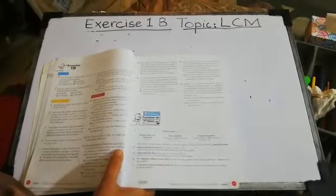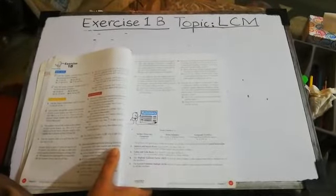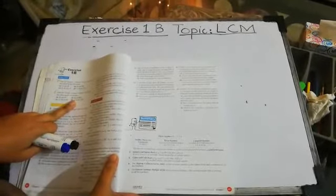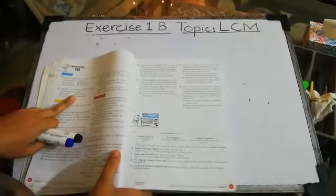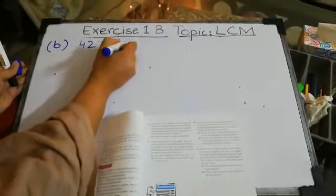So let's start our today's work. Exercise 1B, textbook page number 0 to 1, question number 2. The question is: find the Lowest Common Multiple of each of the following sets of numbers. I'm going to start with part B, question number 2, and your question is to find the LCM of 42 and 462.